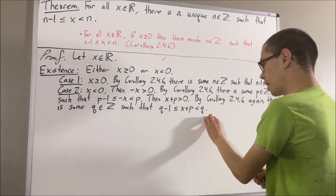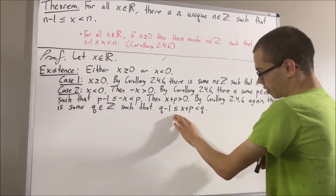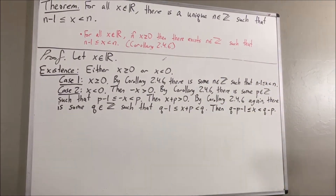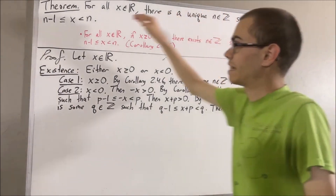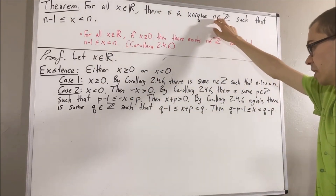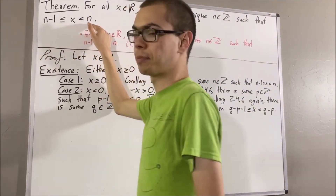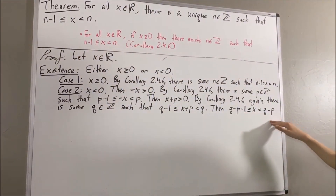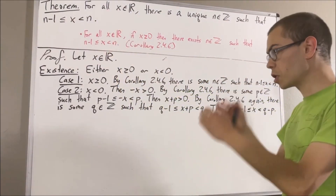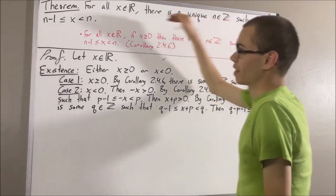Now what we're going to do is take this inequality and subtract p on all three sides. We get q minus p minus 1 is less than or equal to x, which is less than q minus p. We see that there exists an integer that satisfies this inequality: namely, if we take this integer to be q minus p, then q minus p minus 1 is less than or equal to x, which is less than q minus p. So we have shown that there is an integer satisfying this inequality in both cases, and existence is complete.